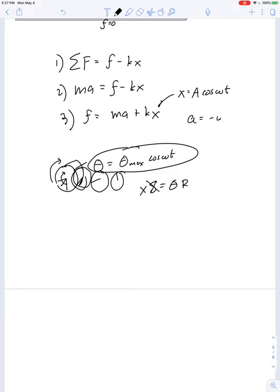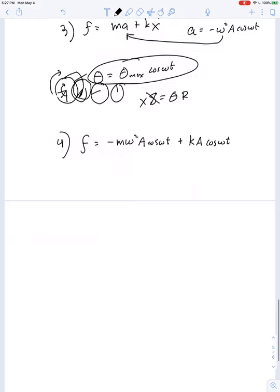And if that's the case, then acceleration would be the second derivative, it would be negative omega squared a cosine omega t. So we can make substitutions to get to step four. Our friction force would be equal to negative m omega squared a cosine omega t plus k a cosine omega t. But, what's omega? Omega was equal to the square root of 2k over 3m. So, f is equal to negative m times 2k over 3m times a cosine omega t plus k a cosine omega t.